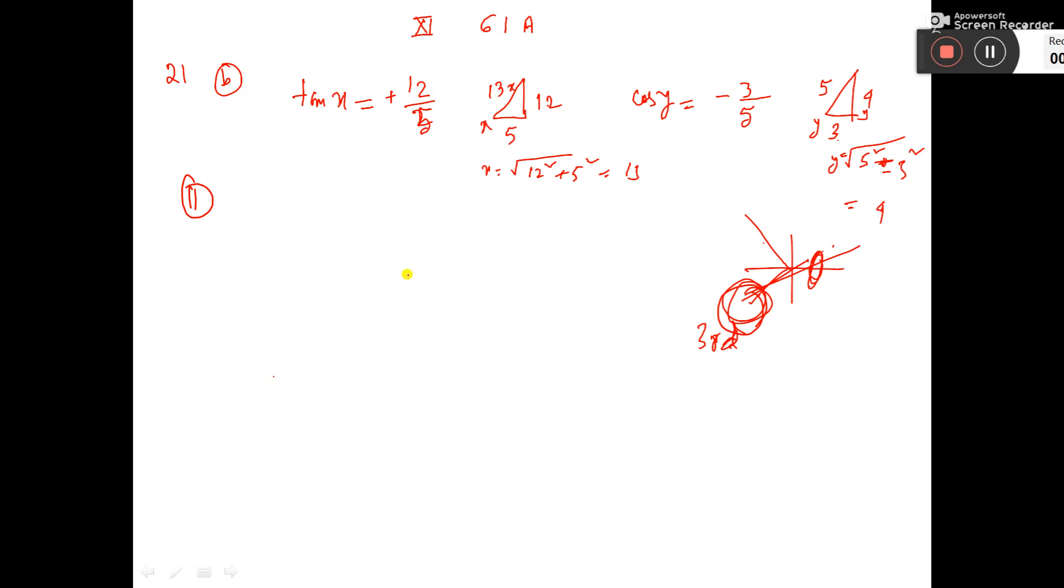Now, we want to find the value of 21b part 2, cos y by 2. So first we have to write this as cos square y by 2.